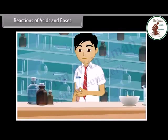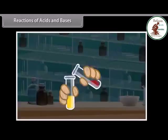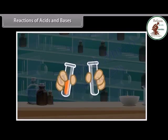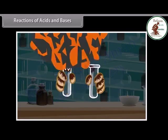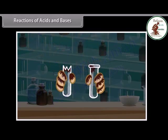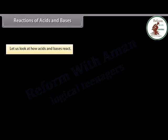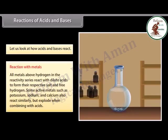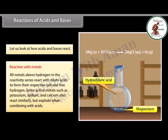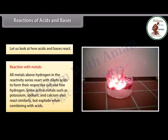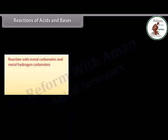Reactions of acids and bases: let us go back to where Gaurav felt the mixing beaker hot. When acid is mixed with base, it produces heat. This may cause the mixture to splash out and cause burns. Also, the glass container may break due to excessive local heating. All metals above hydrogen in the reactivity series react with dilute acids to form their respective salt and free hydrogen. Active metals such as potassium, sodium and calcium also react similarly, but explode when combining with acids.